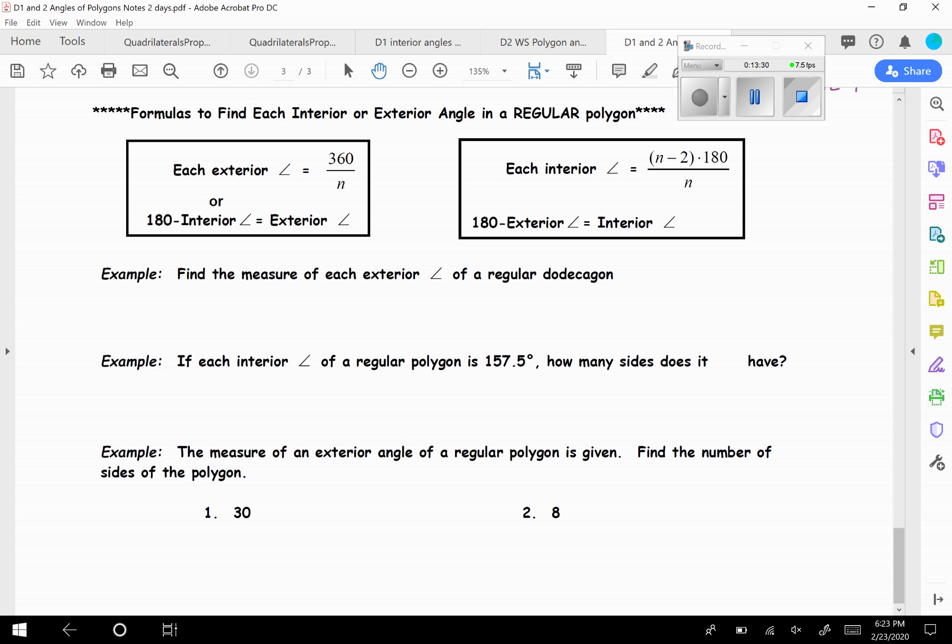So example. Find the measure of each exterior angle of a regular dodecagon. So dodecagon means N is 12. So we need to find the measure of each exterior angle. So we're going to take 360 and divide it by 12. And so if you take 360 and divide it by 12, you're going to get 30. So on a dodecagon, each exterior angle is 30 degrees.